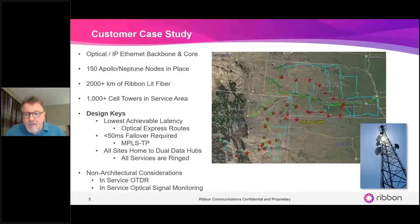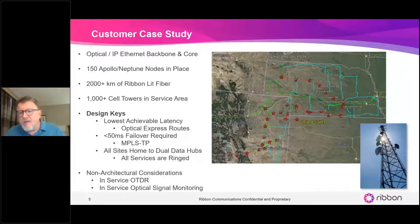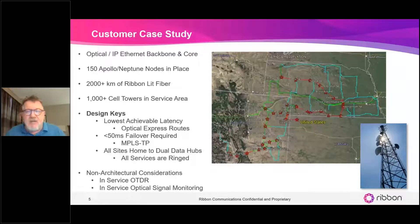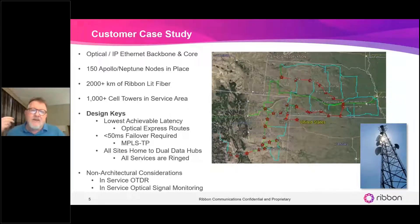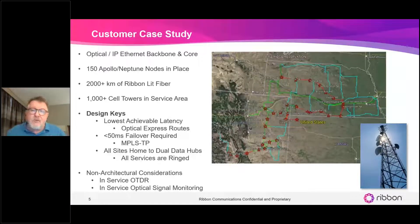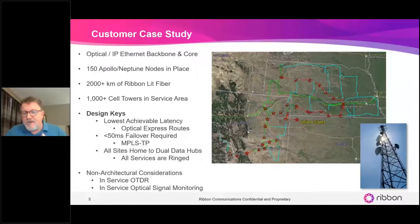Their design requirements were that where possible, we would limit the latency or travel time. When you have 2,000 kilometers of fiber, a significant portion of latency is attributable to the speed of light through fiber — that really becomes the limiting factor, and there's nothing we can do about that, according to Einstein. So we architect the design so that there are low-latency express routes, so that we are not hitting switch after switch after switch unnecessarily for traffic that needs to home-run to a data center.